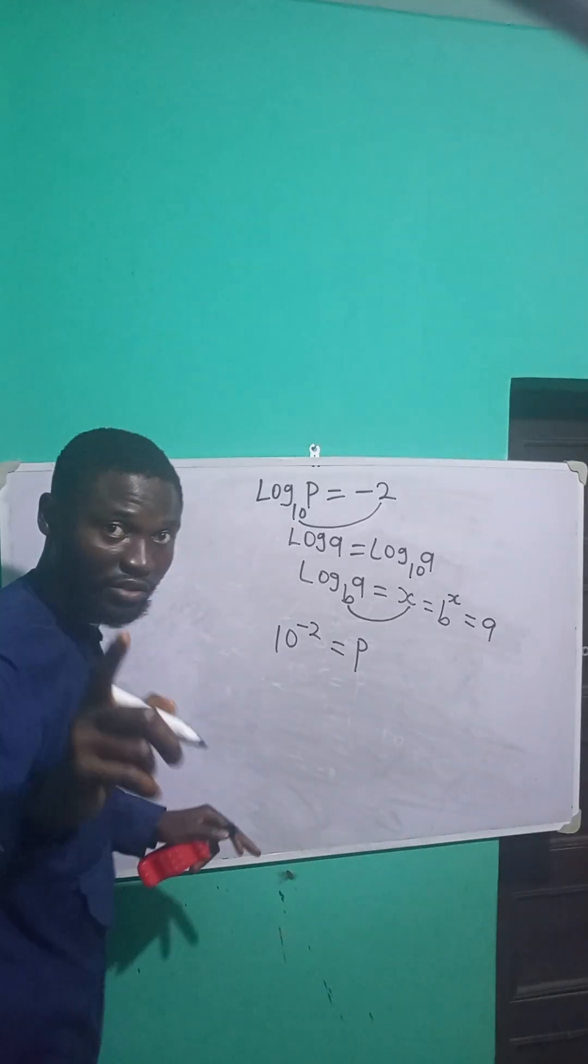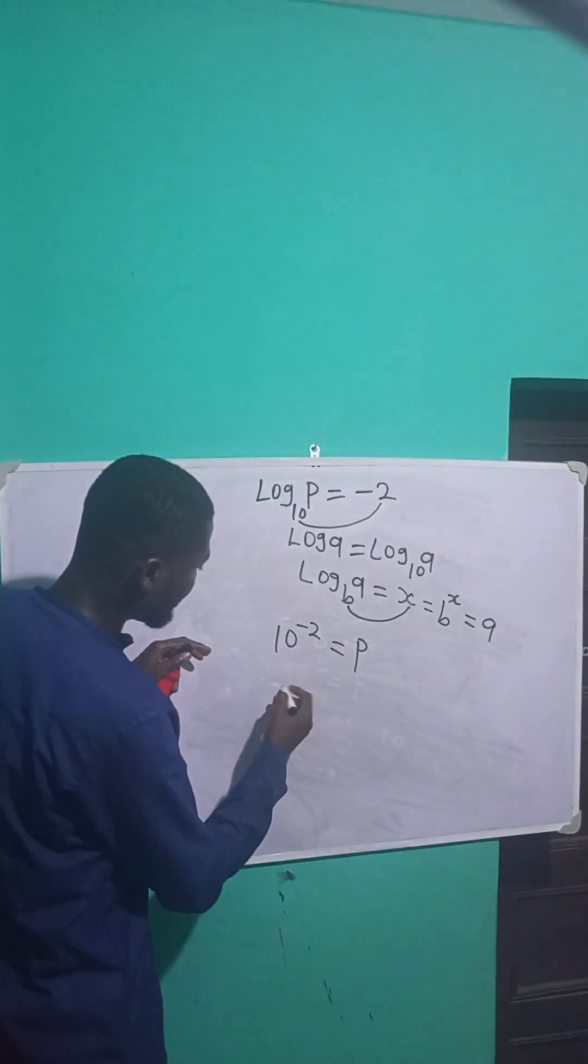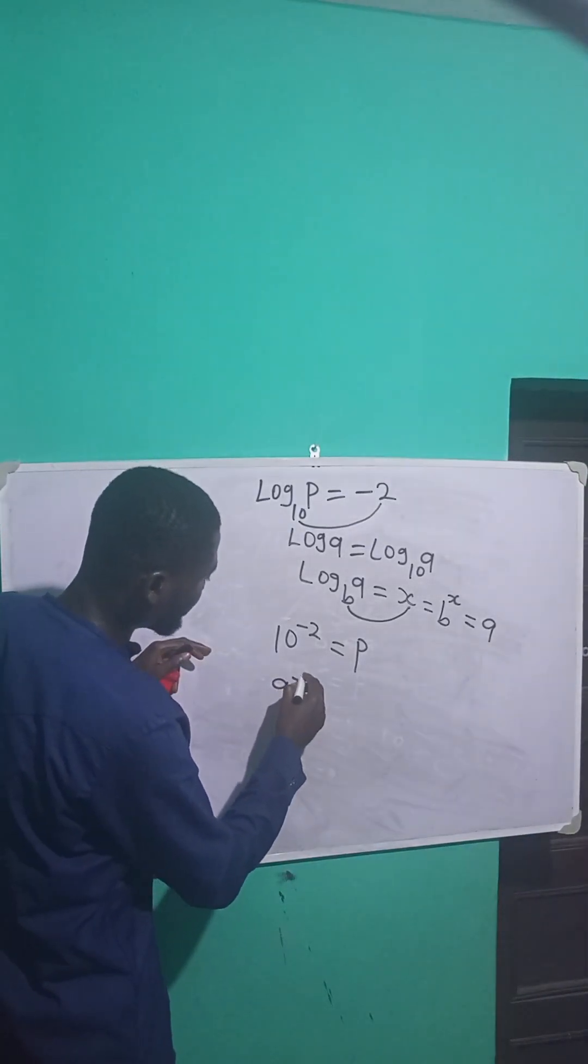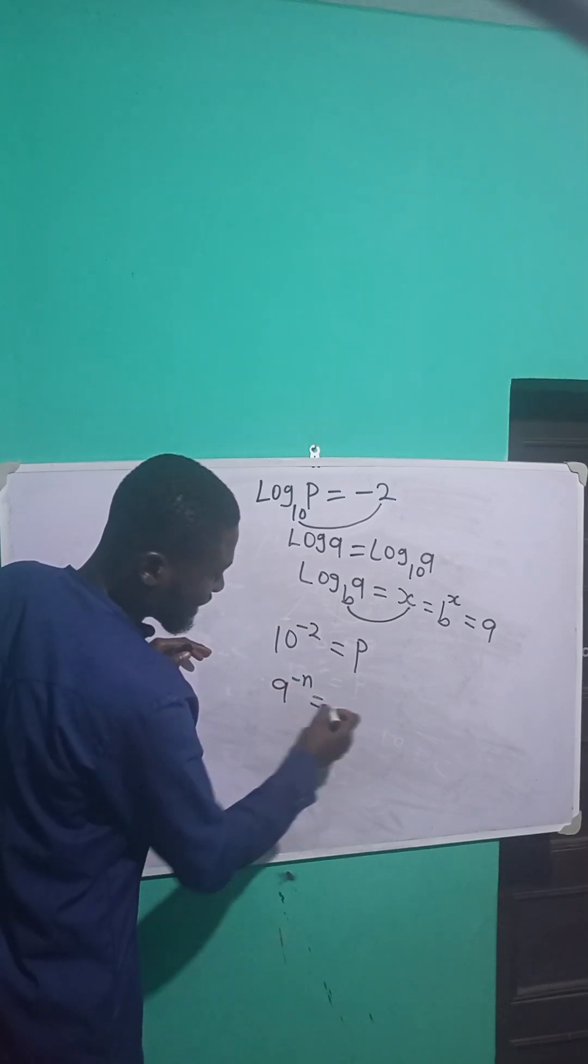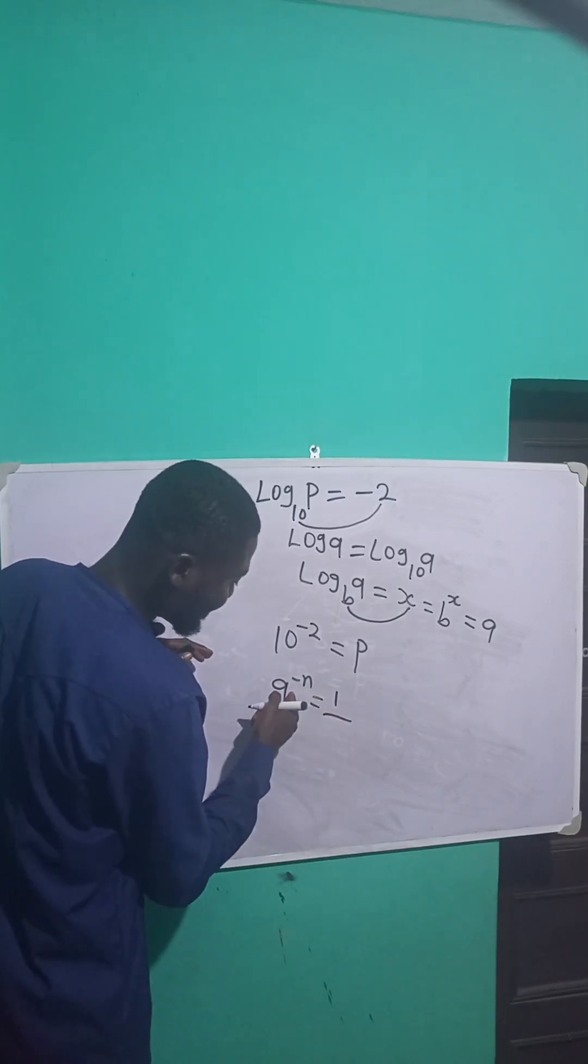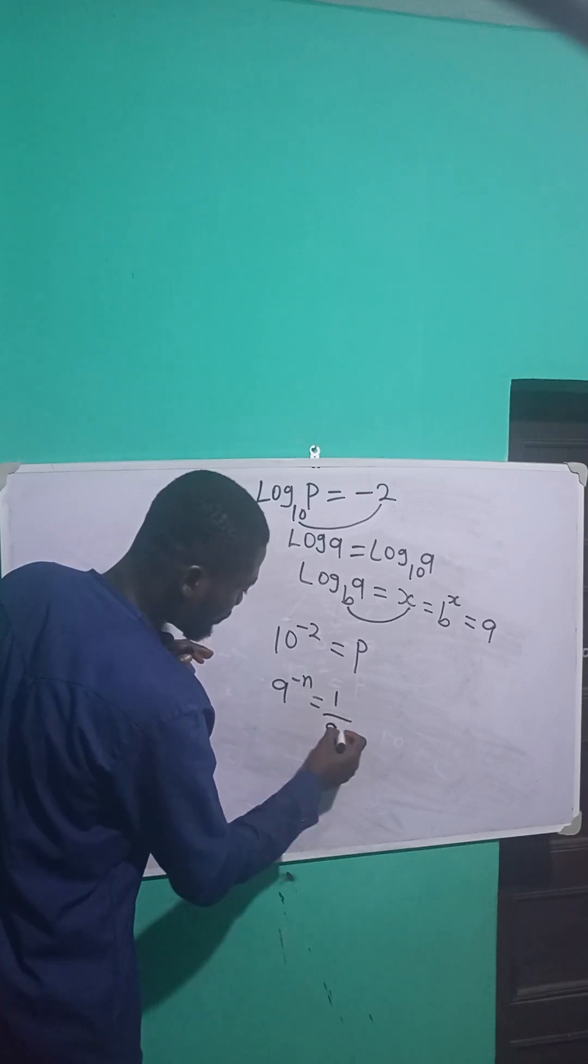Now, remember the exponent rule. If you have, for example, A raised to the power minus n, this can be written as: this minus sign becomes 1 over this A, then raised to the power of n.